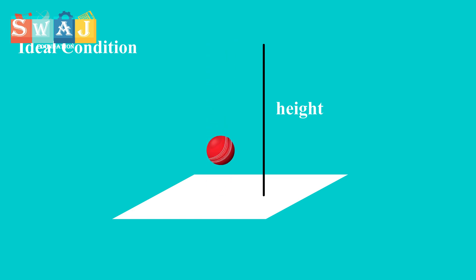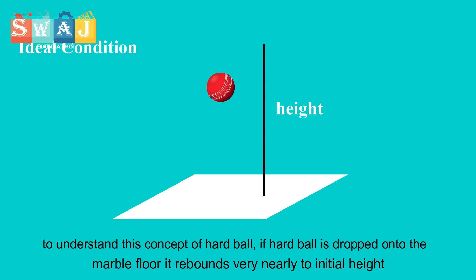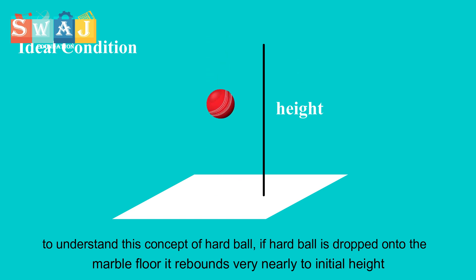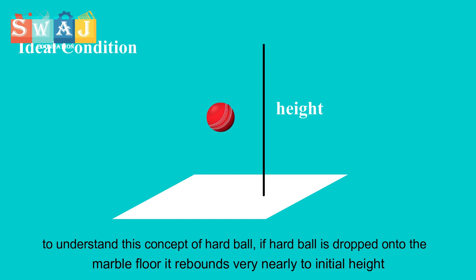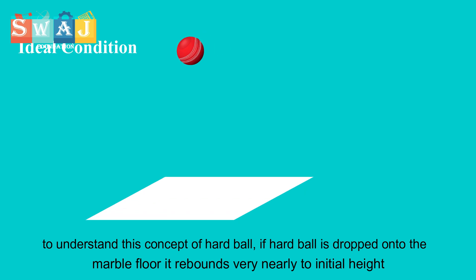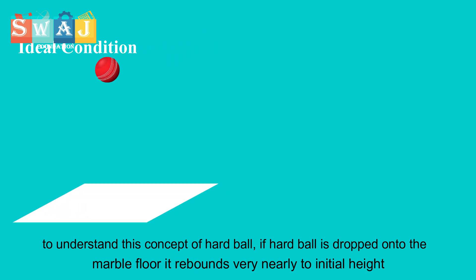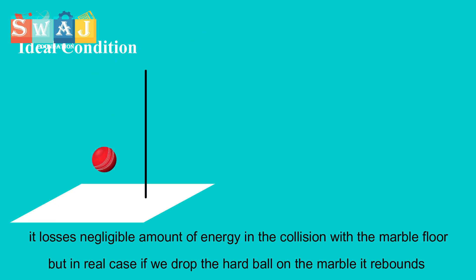To understand elastic collision we take another example of a hardball. If a hardball is dropped onto a marble floor it rebounds to very nearly the initial height, losing a negligible amount of energy in the collision with the floor.